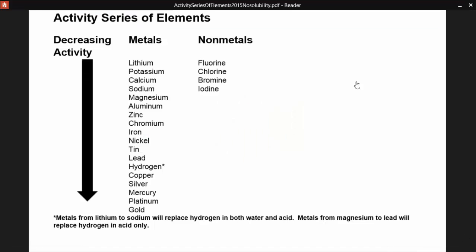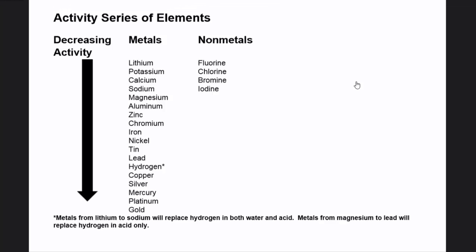Refer to the list when you have single displacement reactions and make sure that the element that's outside at the beginning, the one that's by itself, is higher up on the list than the one in the compound. Then you do the switch. If it isn't, you don't. It's pretty simple.